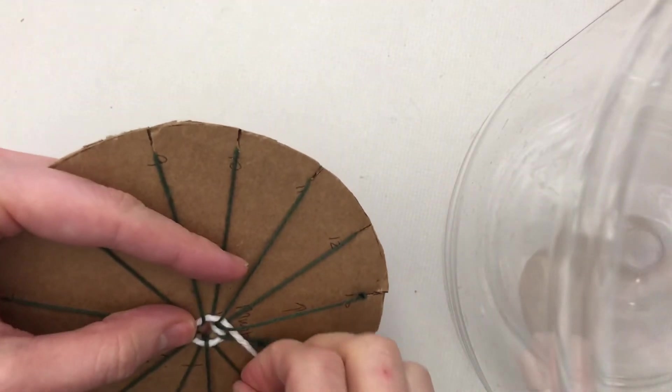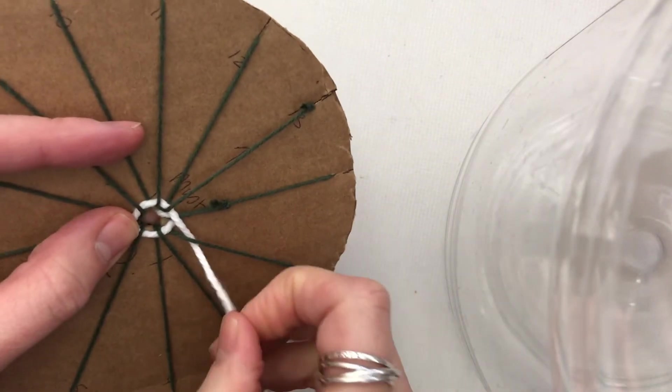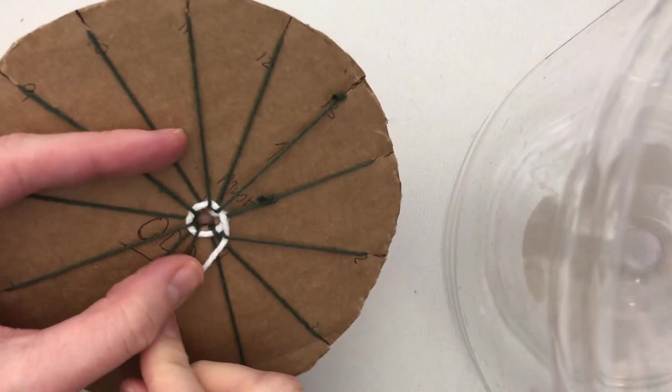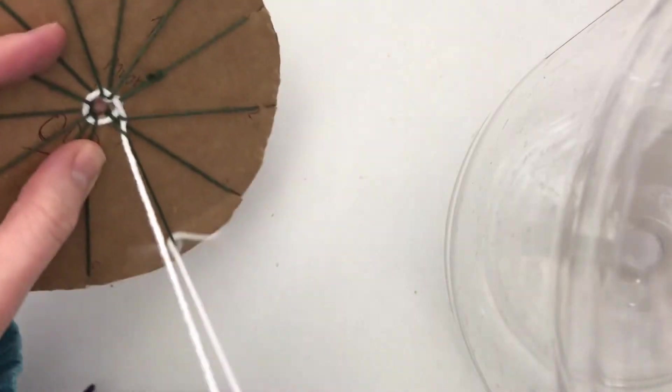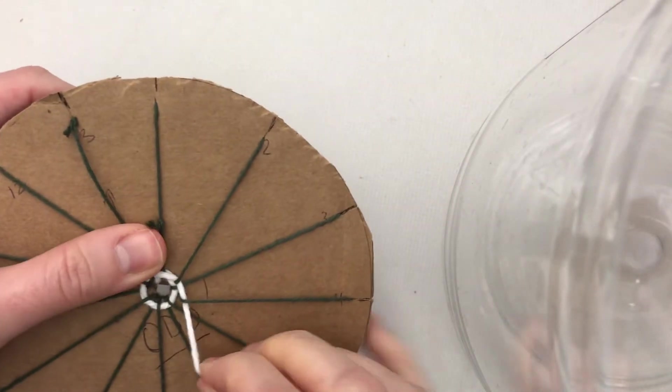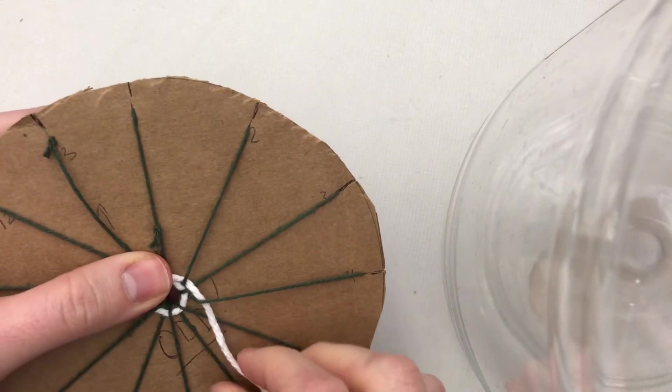That's also why it's important to check to make sure that you don't skip one and you accidentally go over two instead of over one. Because that will keep your change where you are bringing your string over, and it will harm your whole picture in the end.